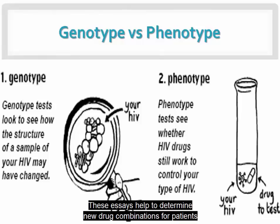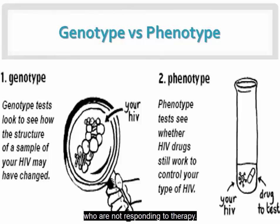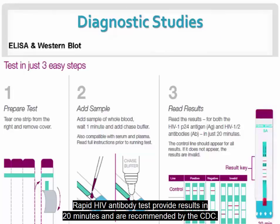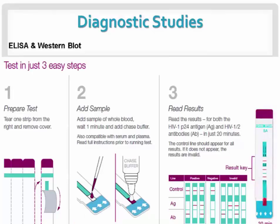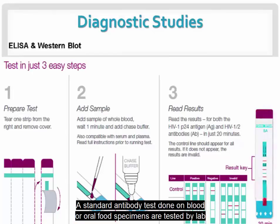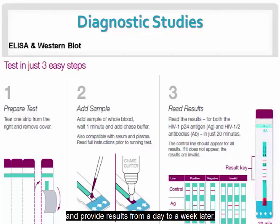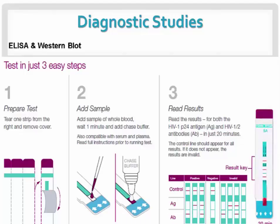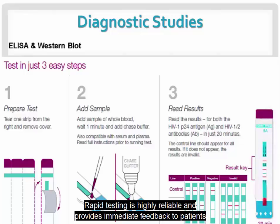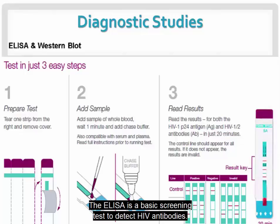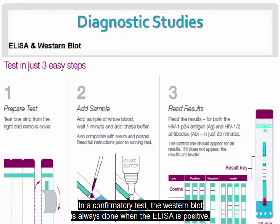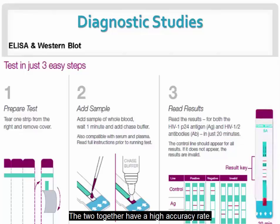These assays help to determine new drug combinations for patients who are not responding to therapy. Rapid HIV antibody tests provide results in 20 minutes and are recommended by the CDC. A standard antibody test done on blood or oral fluid specimens is tested by a lab and provides results from a day to a week later. Rapid testing is highly reliable and provides immediate feedback to patients who can then be counseled about treatment and prevention. The ELISA is a basic screening test to detect HIV antibodies, and a confirmatory Western blot is always done when the ELISA is positive; the two together have a high accuracy rate.